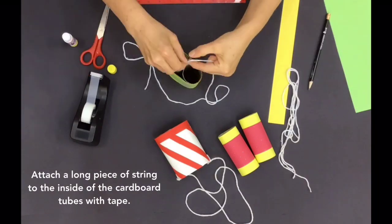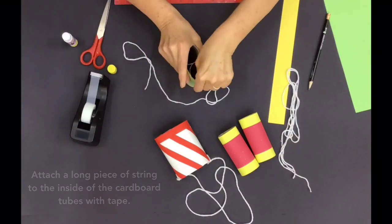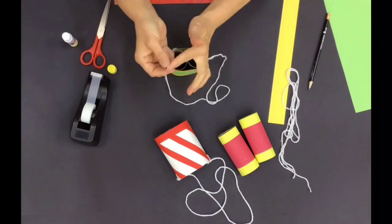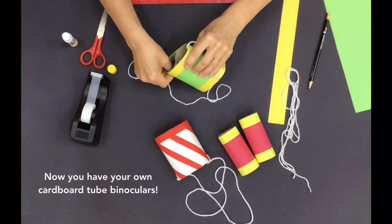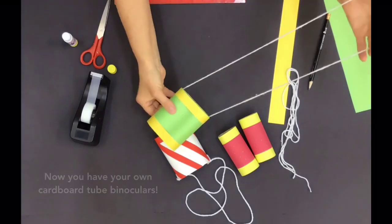Attach a long piece of string to the inside of the cardboard tubes with tape. Now you have your own cardboard tube binoculars.